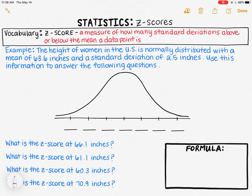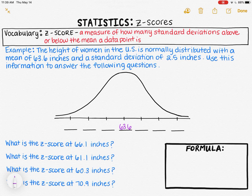Whenever you find out that data is normally distributed, you should be able to draw this bell-shaped curve that has one peak and is symmetrical to represent any normal distribution. We know that in a normal distribution, the mean is always directly in the center, so we can place 63.6 inches, which is our mean, at the very center tick mark. We also know that the standard deviation is 2.5 inches, and the space between each evenly spaced tick mark represents one standard deviation.